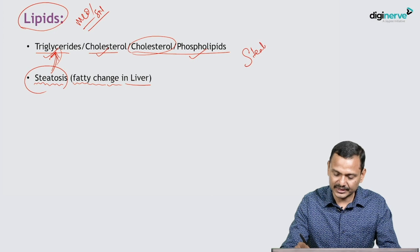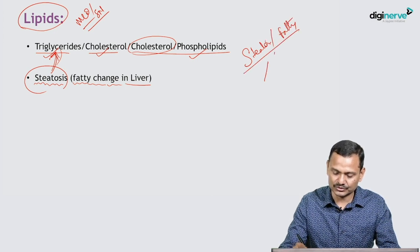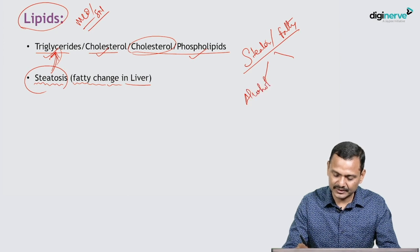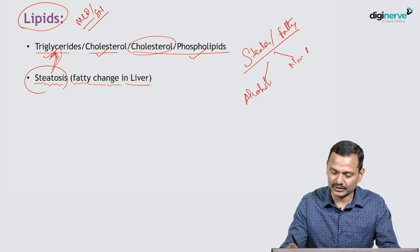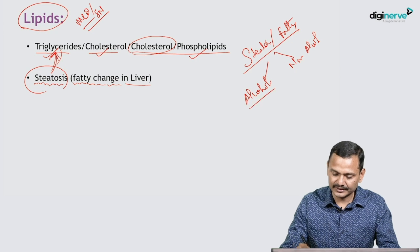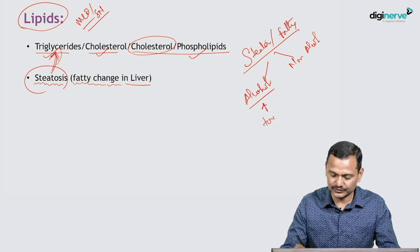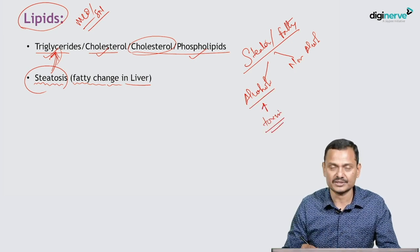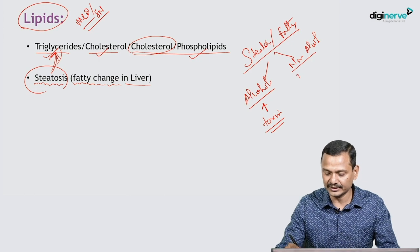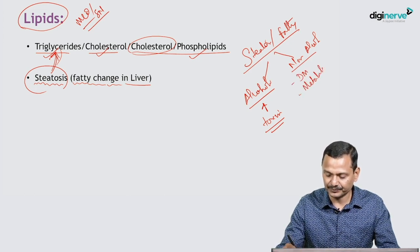Fatty liver can be due to two causes. One is alcoholic liver disease, where alcohol acts as a toxin to the liver and causes cell injury. The other is non-alcoholic fatty liver, associated with diabetes mellitus, metabolic syndrome, and obesity. These are some factors that lead to non-alcoholic steatosis.